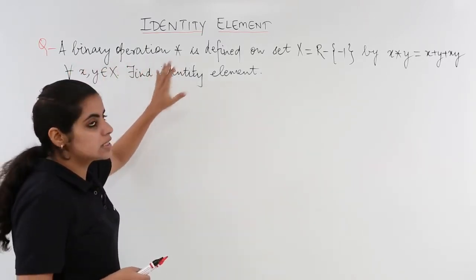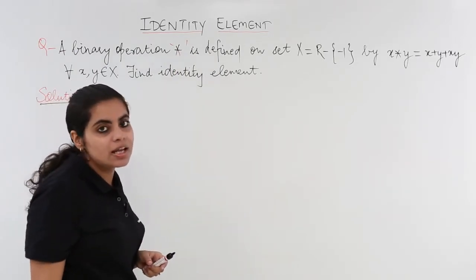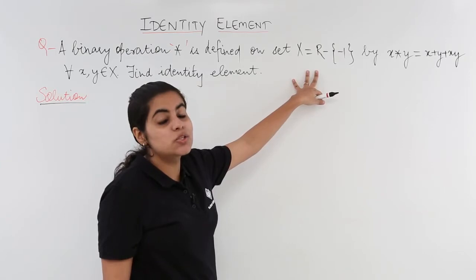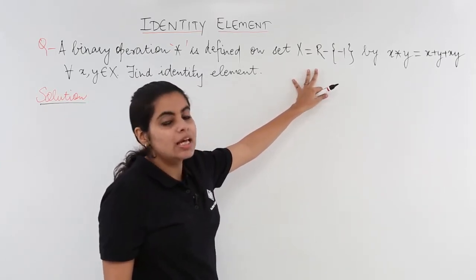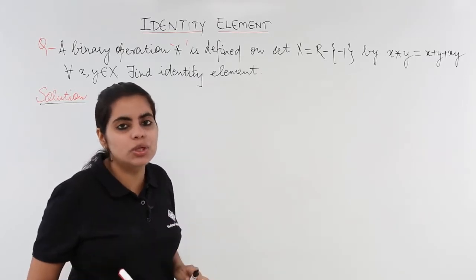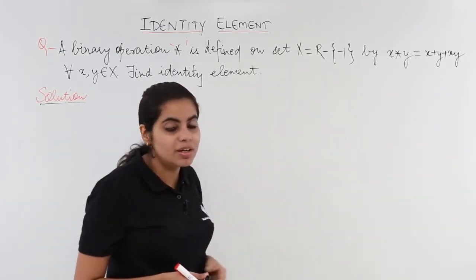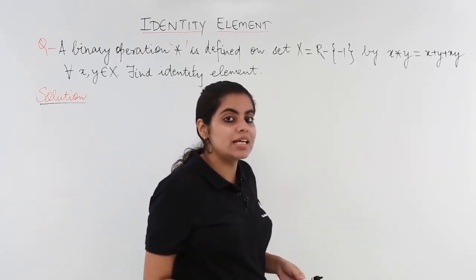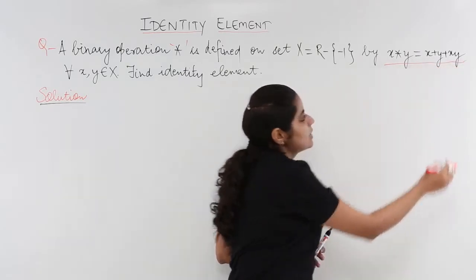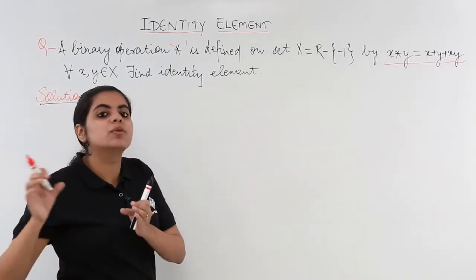A binary operation star is defined on the set X equals R minus {-1}. That means the set is of real numbers, but the only restriction is that minus 1 cannot be included in that set of real numbers. The binary operation is given as x star y equals x plus y plus xy. That means the sum plus the product.